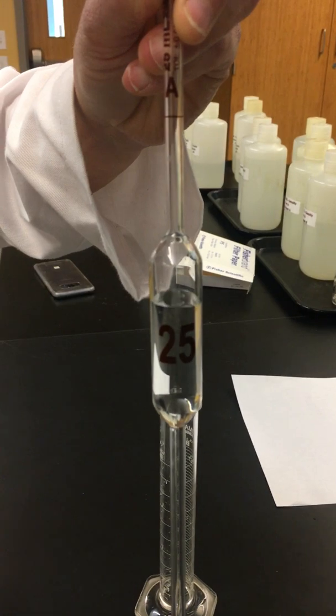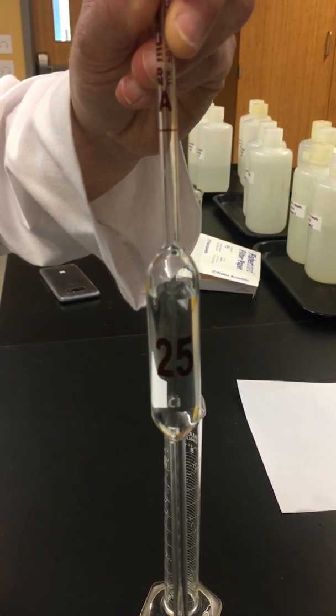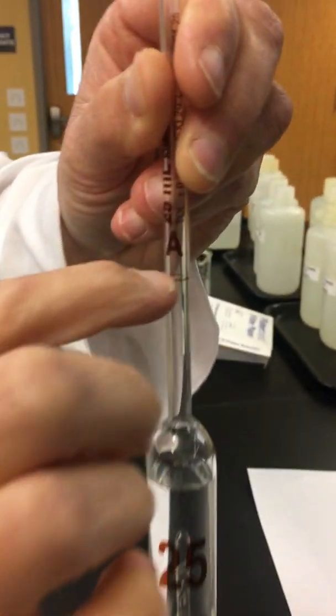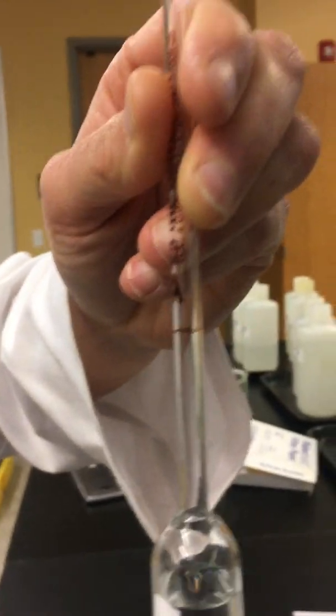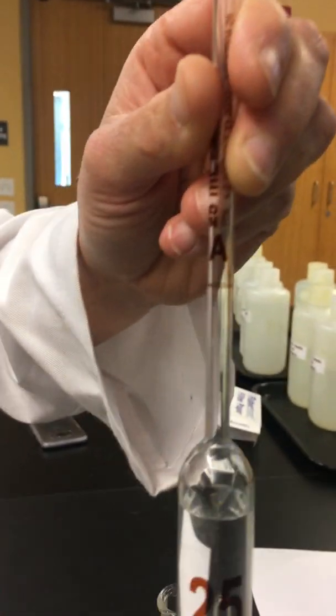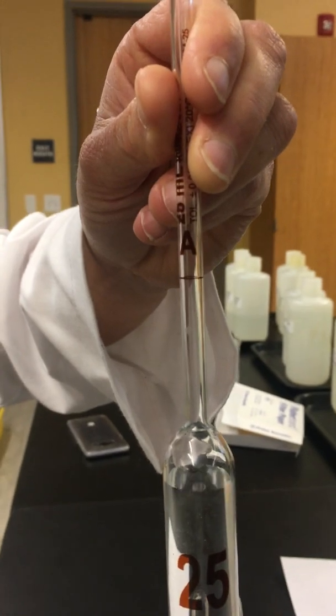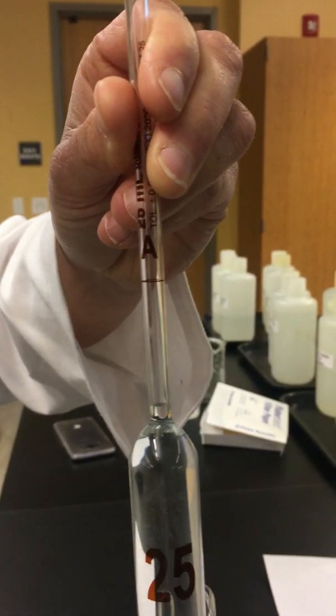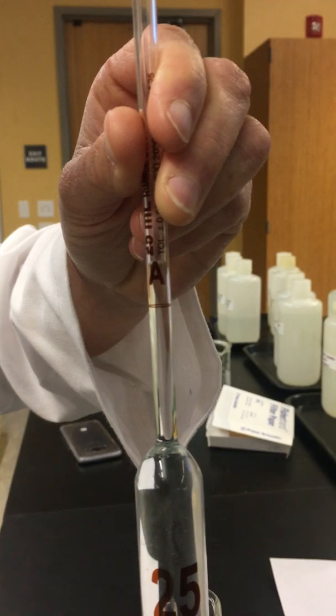Now every single one of these volumetric pipettes has a line on it, and this line is calibrated to be 25.00 milliliters. We want to pull up our liquid, and we always pull it up a little bit above.